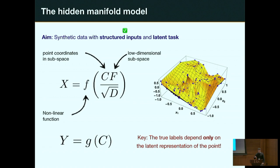This creates structured inputs concentrated on a lower-dimensional manifold, even if it's not easy to write down explicitly. The key is that labels are just a function of the position c on that lower-dimensional manifold — not of x directly. So I give you the x's and y's, you train your network, but you don't have access to f or c.